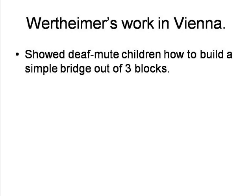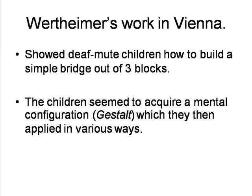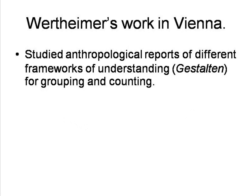Wertheimer himself made some of the first crucial observations shortly after his Frankfurt experiments on perception. Returning to Vienna, he was involved in a project to find ways of teaching deaf-mute children at the Psychiatric Institute. He found that if he demonstrated building a simple bridge out of three wooden blocks to a deaf-mute child, the child was able to copy his bridge, albeit usually after one or two mistakes. Having seemingly grasped the basic concept, the child then constructed a variety of bridges of its own, all sharing the common characteristics of two bricks of equal length supporting a third horizontal brick towards its ends. These new bridges seemed to be based on the acquisition of a mental configuration, a Gestalt, by the child.